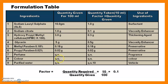All calculations are made this way. Perfumes, colors, and water require quantity sufficient. Purified water is quantity sufficient to 10 ml. Sodium lauryl sulfate acts as a surfactant. Sodium citrate is a viscosity enhancer. Hydroxypropyl methyl cellulose (HPMC) is a thickening agent. Glycerine is used as a viscosity enhancer and conditioning agent. Methylparaben and propylparaben are preservatives. Perfume is for fragrance, color is the colorant, and purified water is the vehicle.